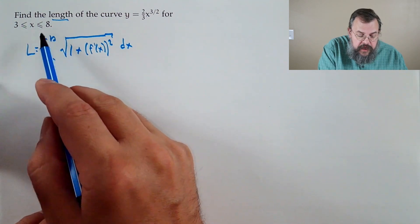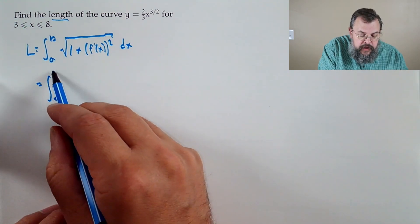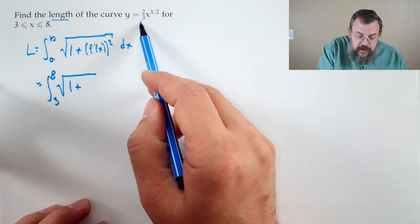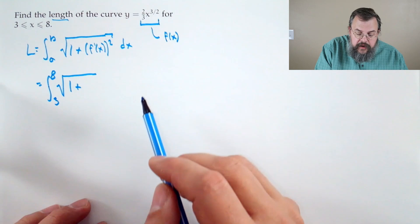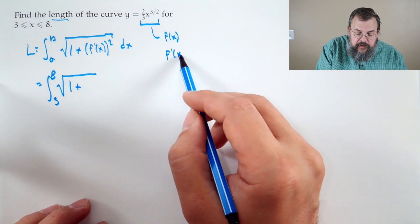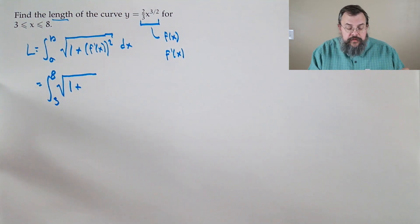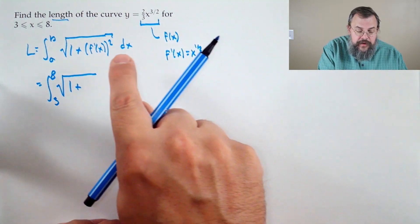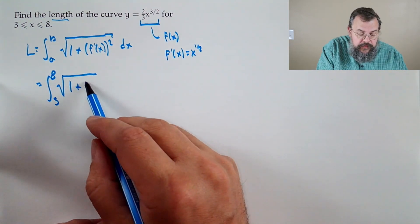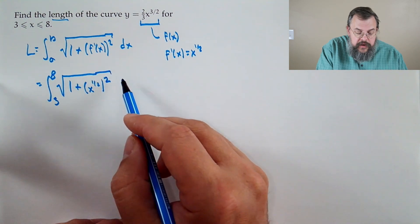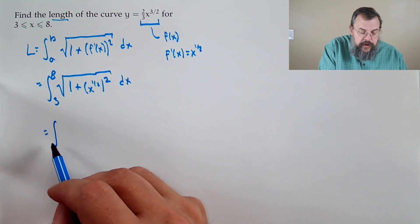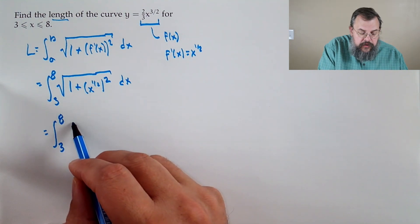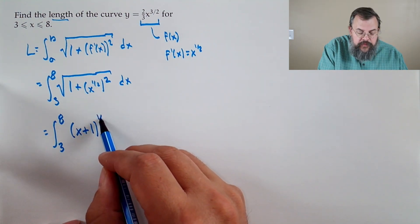In our case, a to b is three to eight. So we have the integral from three to eight of the square root of one plus the derivative squared. Our f(x) is two-thirds x to the three-halves, so f'(x): the three-halves comes down, two-thirds times three-halves is one, giving us x to the one-half. Now we're going to square it — x to the one-half squared becomes simply x. So we can write the inside as x plus one to the one-half.